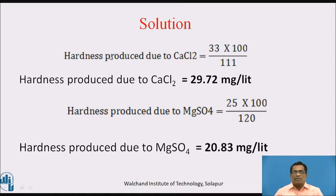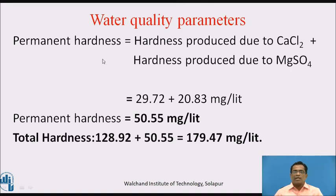Hardness due to calcium chloride = 29.72 mg/L. Hardness due to magnesium sulphate = 25 × 100 ÷ 120 = 20.83 mg/L. Permanent hardness = 29.72 + 20.83 = 50.55 mg/L. Overall total hardness = 179.47 mg/L.